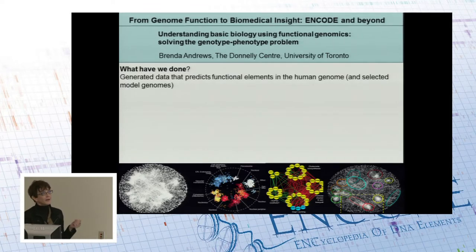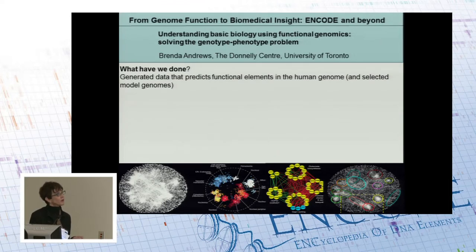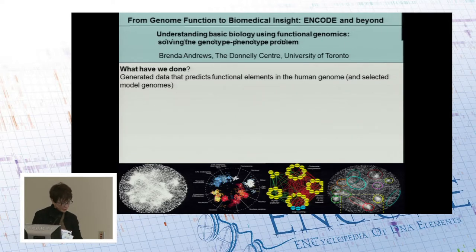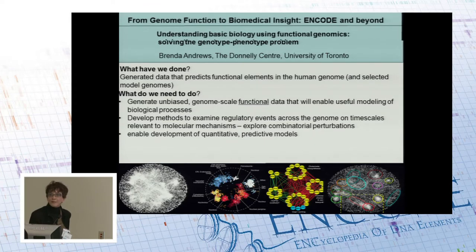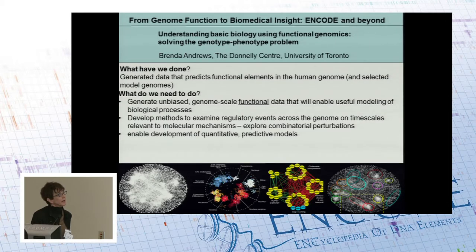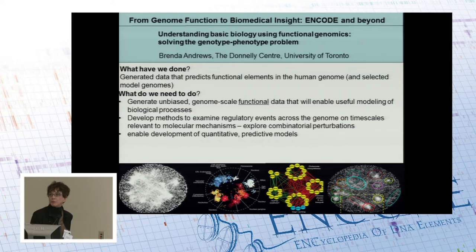What we've been talking about over the course of this workshop is what we've done in the context of ENCODE projects so far, which is to generate data to predict functional elements in the human genome and selected model organism genomes. What I think we need to do is generate unbiased genome-scale functional data that will enable useful predictive modeling of biological processes.